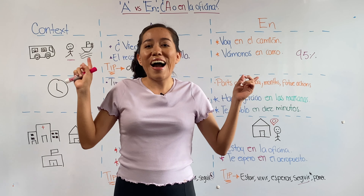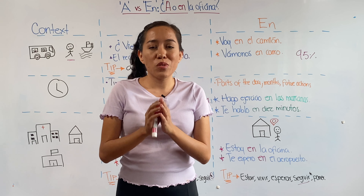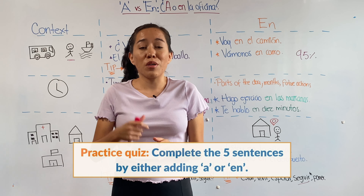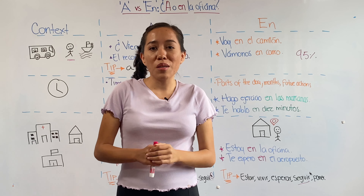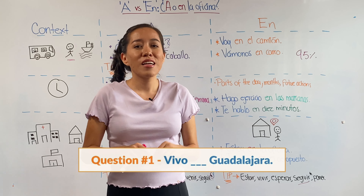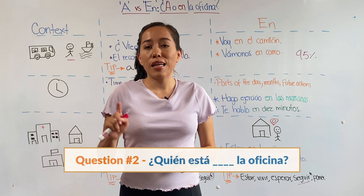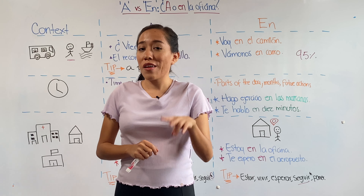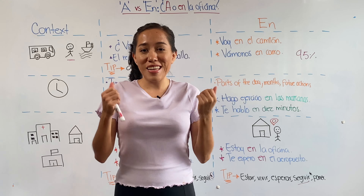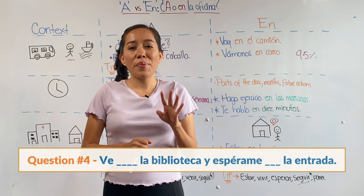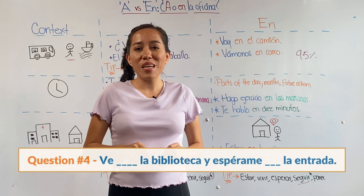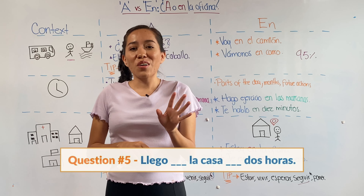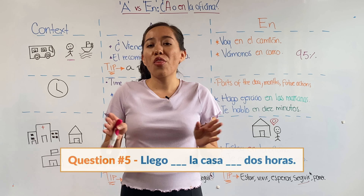Now that you know the difference between a and en, here's a quiz with five sentences. Number one: vivo ___ Guadalajara. Number two: ¿Quién está ___ la oficina? Number three: da vuelta ___ la derecha. Number four has two blanks — pay attention to context and verbs: ve ___ la biblioteca y espérame ___ la entrada. Number five also has two blanks: llego ___ la casa ___ dos horas.